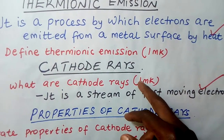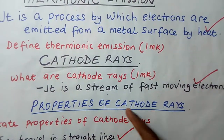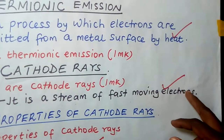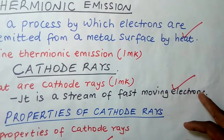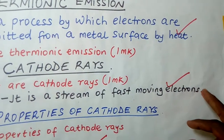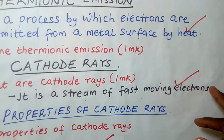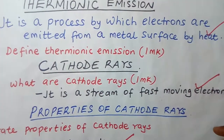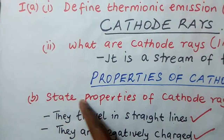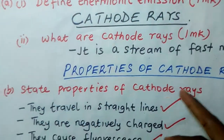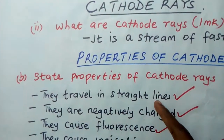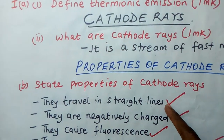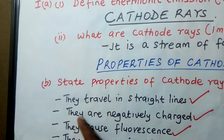The examiner has given one mark, and you get it. Now what are the properties of cathode rays? We are saying cathode rays are a stream of fast-moving electrons, which means cathode rays are electrons. And we all know that electrons are negatively charged. So one of the properties of cathode rays is that they are negatively charged. The first property is they travel in straight lines. They are negatively charged.